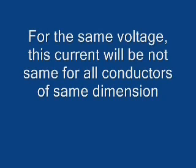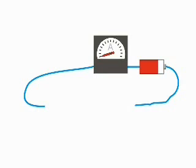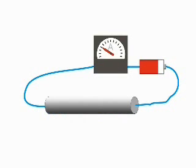But for the same voltage, this current will not be same for all conductors of same dimension. That means, if you use an aluminum conductor and measure the current through it, and then you use a copper conductor of same dimension, that is of same length and cross section, and measure the current through it, you will find the current in copper conductor is more than that of aluminum conductor for same applied voltage.